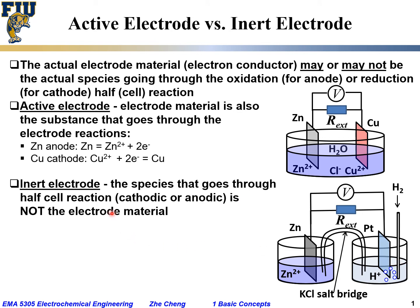In this case, we encounter the so-called inert electrode, meaning the species undergoing the half-cell reaction is not the electrode material. On the zinc electrode, the zinc metal still undergoes oxidation — the anodic half-cell reaction — where zinc metal gives out electrons to become zinc ions dissolved into the solution. The electrons released travel through the external circuit into the platinum electrode.